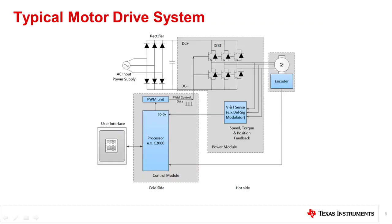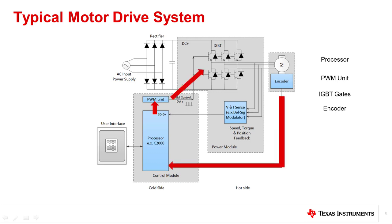Here's a simplified typical motor drive system. Typical data communication links in motor drive includes processor to PWM units, PWM units to IGBT gates, encoder to processor, voltage and current sensing unit to processor, and external IO units to processor. These different links may be located on different PCBs.